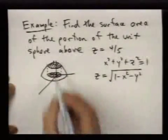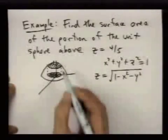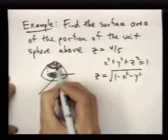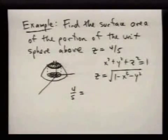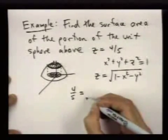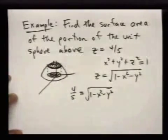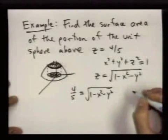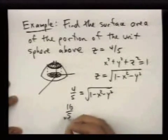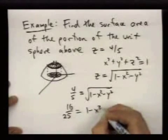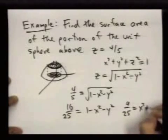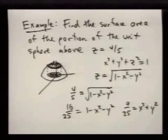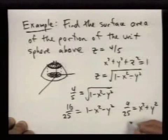And what is the region we're integrating over? Well, that's what we have to figure out, the radius of this circle here. So that's when z is equal to 4 fifths. And so we can just figure out what circle that is by seeing what circle has this equation. So you solve this, you can square both sides. You get 16 twentieths, I mean, equals 1 minus x squared minus y squared. And you go through it, and you'll get 9 twentieths equals x squared plus y squared. And so this describes a circle of radius 3 fifths.